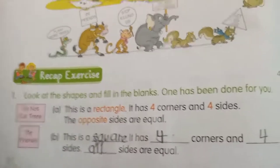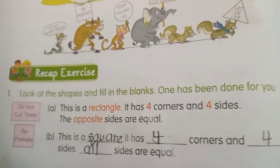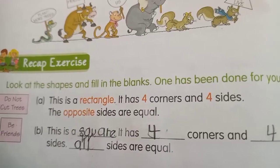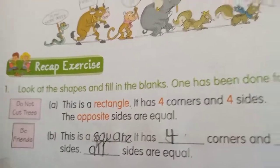Okay so friends, over here, first question: look at the shapes and fill in the blanks. One has been done for you. A. This is a rectangle. It has 4 corners and 4 sides. The opposite sides are equal.